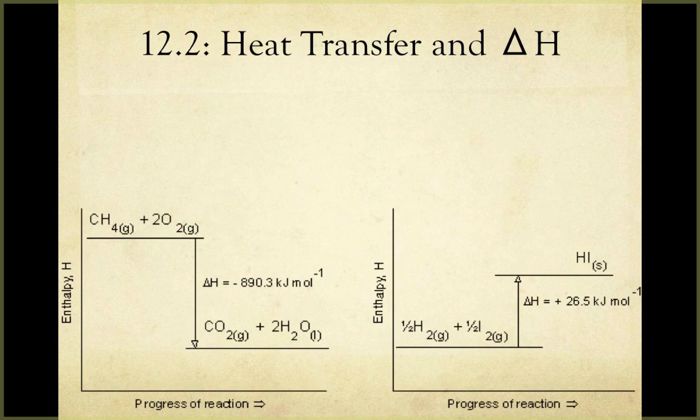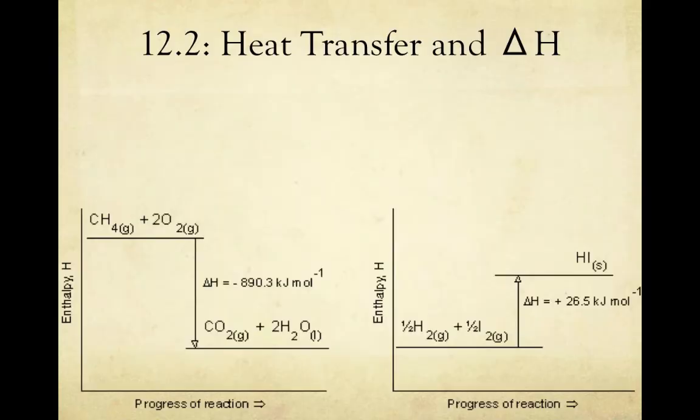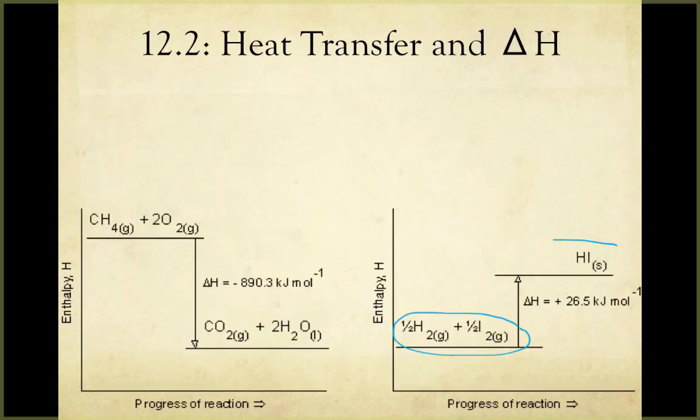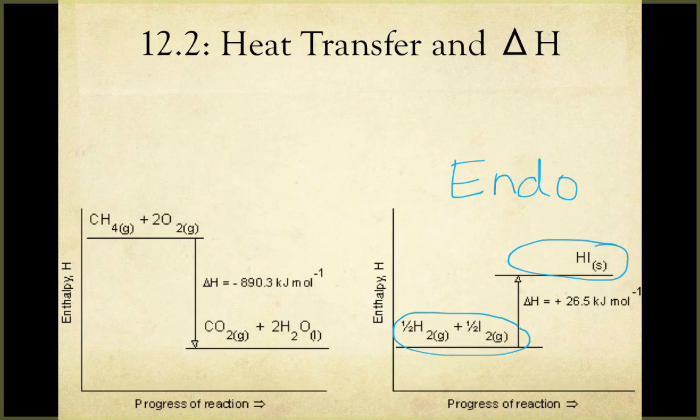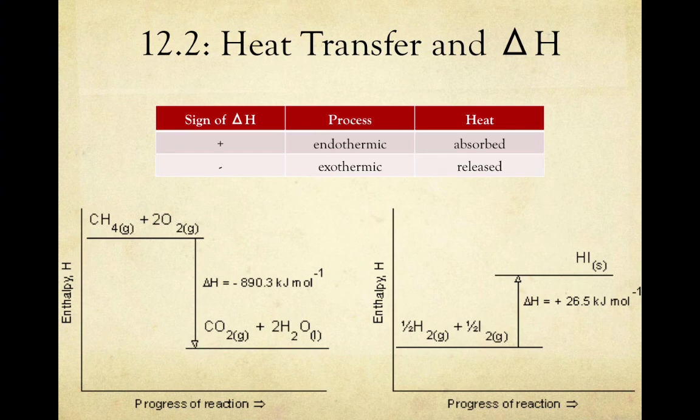Looking now at the reaction on the right, we see that our reactants began with a relatively low enthalpy, and our products had a higher enthalpy. This means energy was absorbed, making this an endothermic reaction, and again giving us a positive delta H, since our final value is larger than our initial value. In summary, in endothermic processes the sign on delta H will be positive because heat is absorbed, whereas in exothermic processes the sign on delta H will be negative because heat is released.